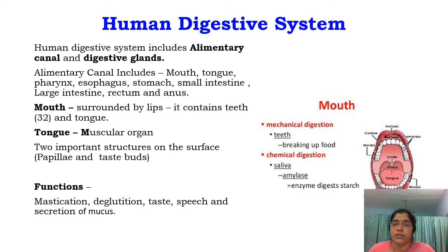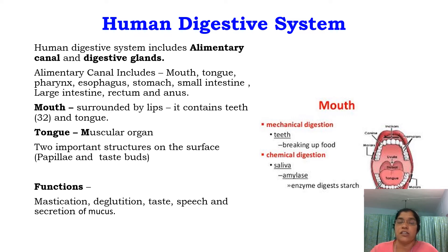In the mouth, two types of digestion take place — both mechanical and chemical digestion. In mechanical digestion, teeth break up the food. In chemical digestion, the amylase present in the saliva digests the starch present in the food.